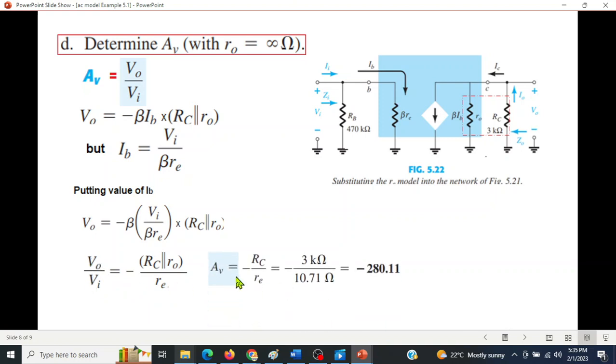A_v = -R_C / r_e. We have just seen that R_C || r_o when r_o is infinity results in R_C, that is why we are writing R_C / r_e. Plugging in the values, the gain is -280.11.